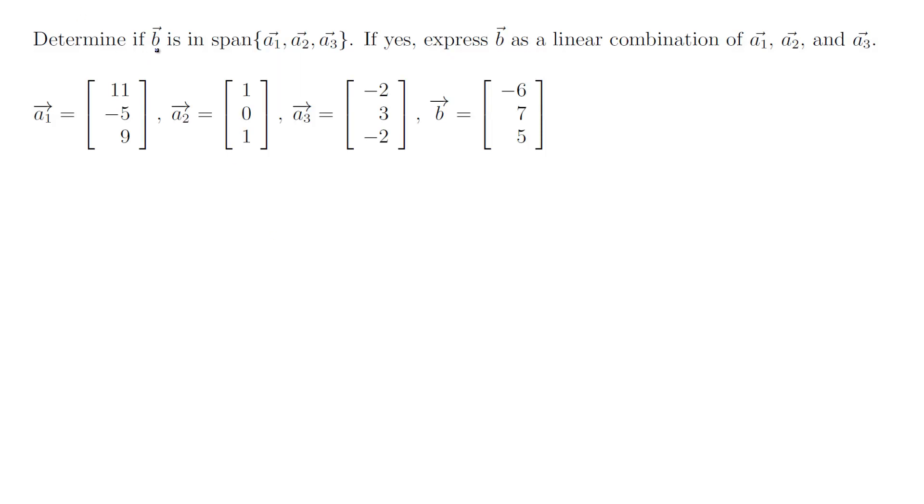Determine if B is in span{a1, a2, a3}. If yes, express B as a linear combination of a1, a2, and a3. We are given a1, a2, a3, and B. We are trying to see if B can be written as a linear combination of these three vectors.